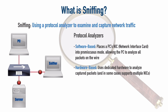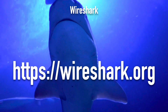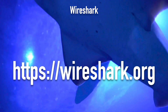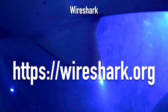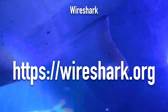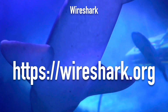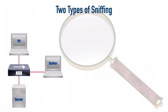The specific software-based protocol analyzer we're using in this course is called Wireshark. You can get a free copy at wireshark.org. We'll see how to select traffic to monitor using Wireshark later in this video. First, I want to define two different types of sniffing that the CEH exam wants you to know about.